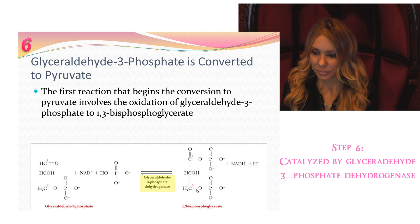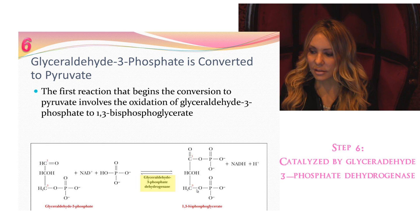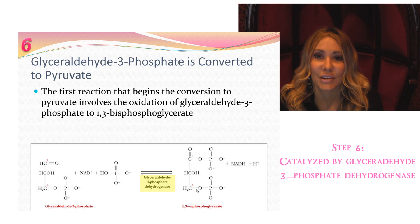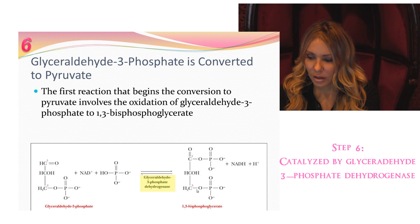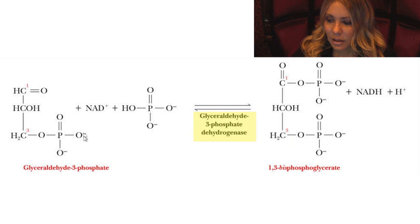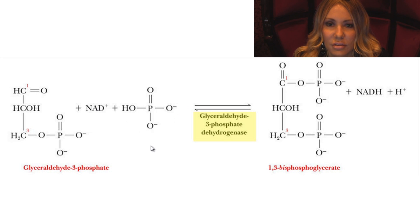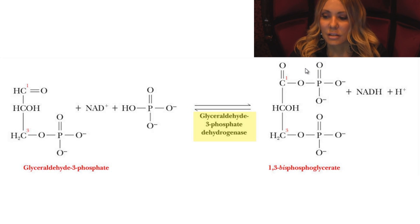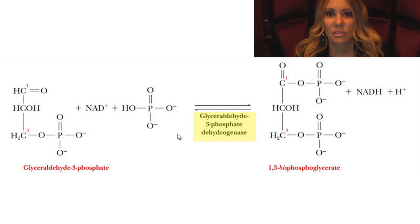Step 6 is catalyzed by glyceraldehyde 3-phosphate dehydrogenase — a dehydrogenase catalyzing an oxidation. We go from glyceraldehyde 3-phosphate and reduce NAD+ in this reaction. Importantly, a phosphate ion from the cytosol — not from ATP, just a free-floating inorganic phosphate — is used in a reaction to place a phosphate on C1 of glyceraldehyde 3-phosphate. That costs energy, but the oxidation is exergonic, so when added together the reaction will proceed.